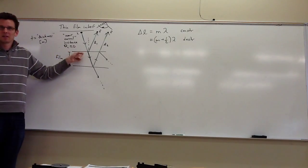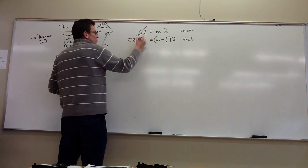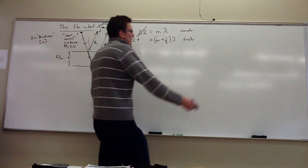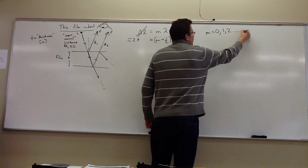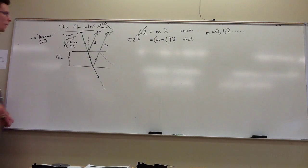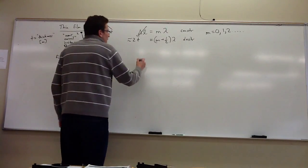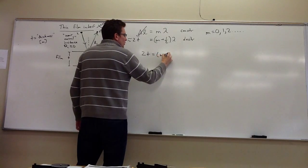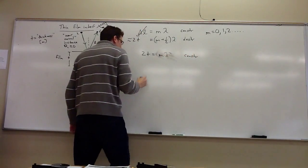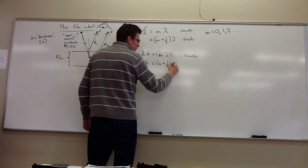Since the path difference doesn't alternate in terms of which beam is longer — beam two always travels longer by 2T — we also have no need for negative integers. Remember the whole point of negative integers in the two-slit case was so that we could have a negative path difference. So we don't need negative integers here.